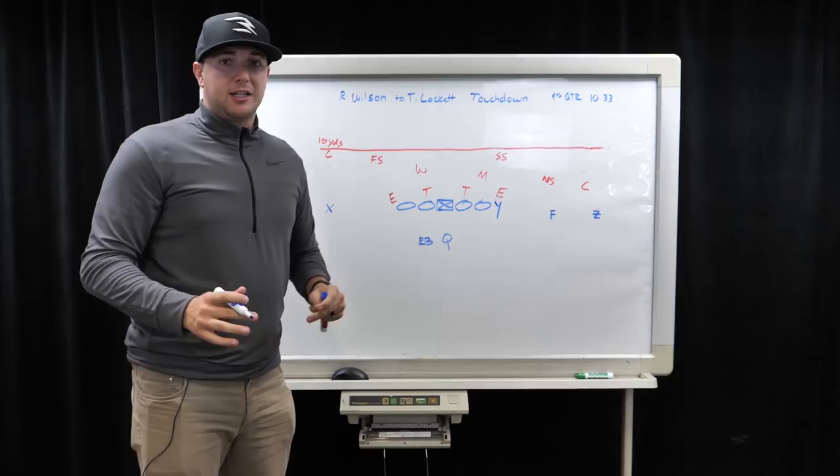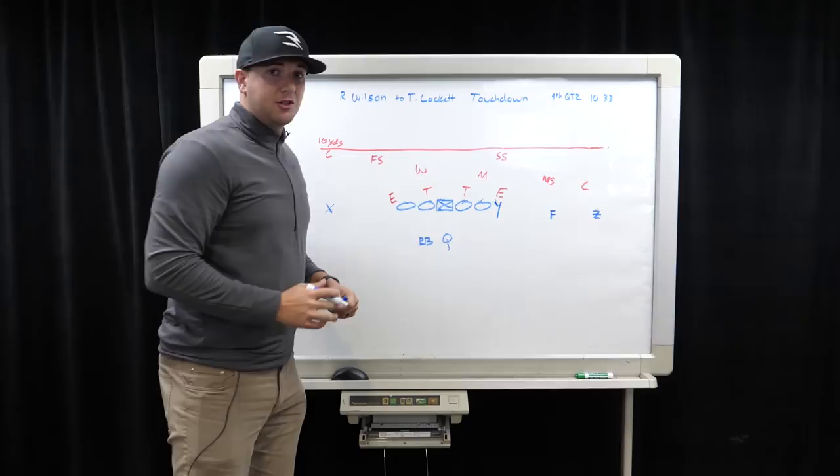The reason why he did this is if he had checked out of this play, Chicago might have checked out of this cover zero. So he wanted to take advantage of the situation.